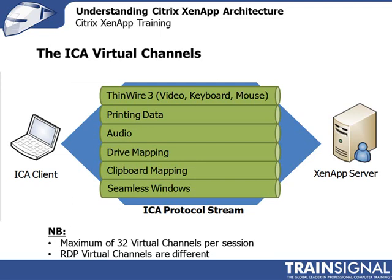Within the ICA protocol, you can have a maximum of 32 virtual channels per session. Note that RDP virtual channels — Microsoft's equivalent protocol — are different from ICA virtual channels. The types of ICA virtual channels available include ThinWire, which makes up the essence of the ICA protocol and sends video, keyboard, mouse clicks, and so on. You can also encapsulate printing data, audio, drive mappings, clipboard mappings, seamless windows, and more — up to 32 virtual channels total.